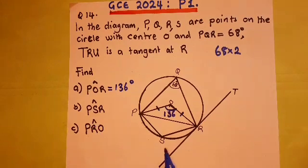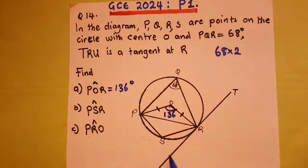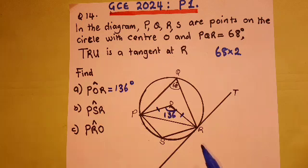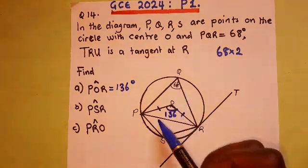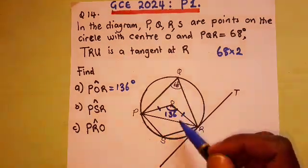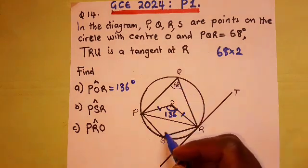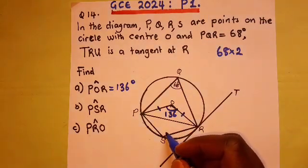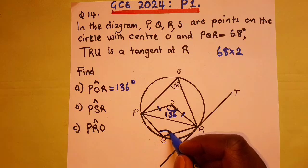Then, PSR. PSR. You know there is a theorem that says, opposite angles in a cyclic quadrilateral. Opposite angles in a cyclic quadrilateral add up to 180.